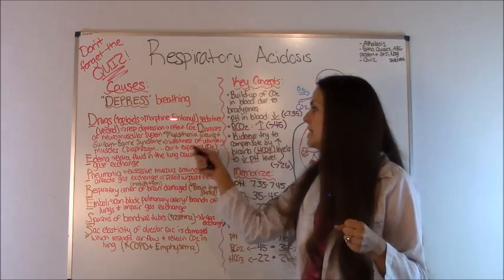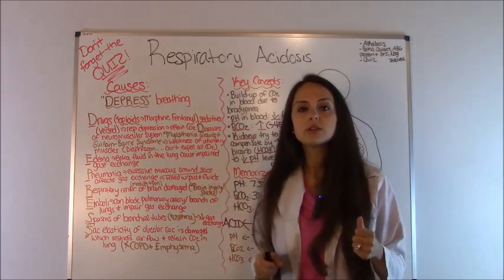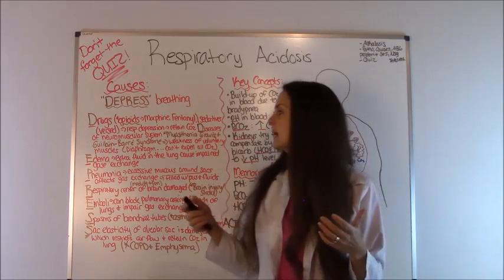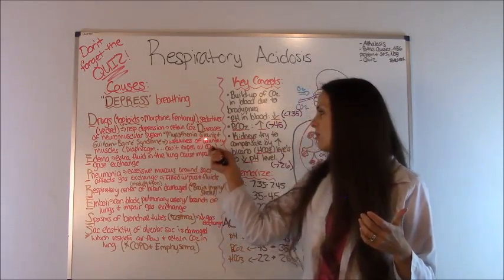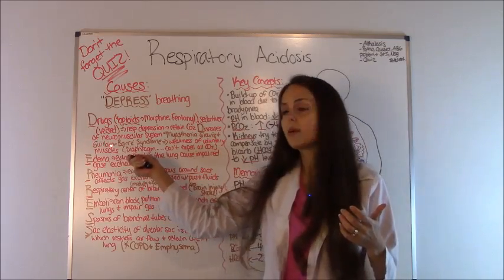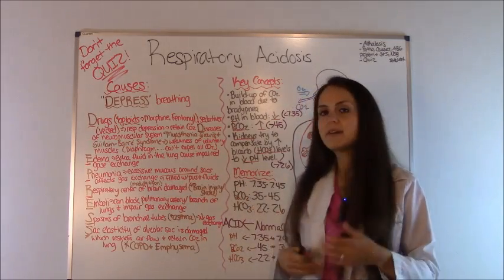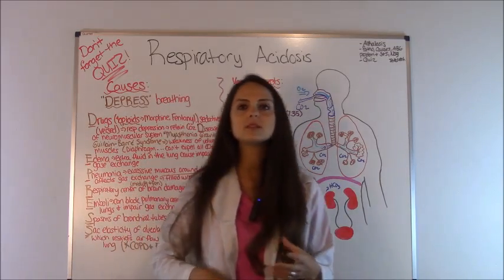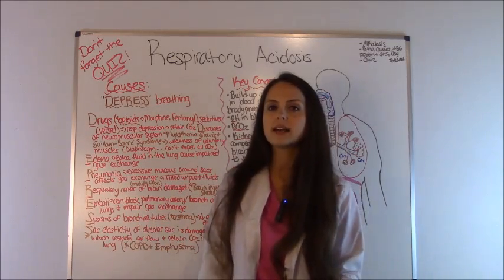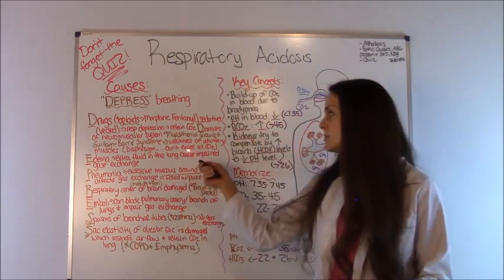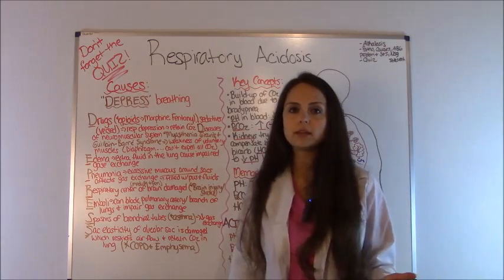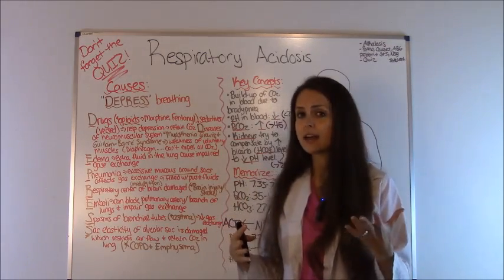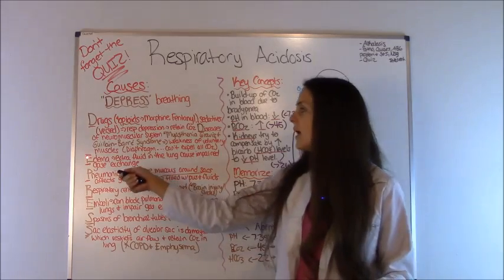The other D - Diseases of the neuromuscular system. This is myasthenia gravis or Guillain-Barré syndrome. This is weakness of the voluntary muscles, like the diaphragm, which helps to squeeze that carbon dioxide out. In these syndromes, they're not working properly, so they can't expel that carbon dioxide. It's hanging around in there.